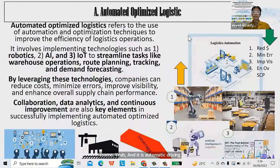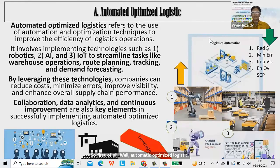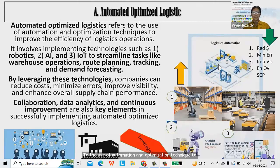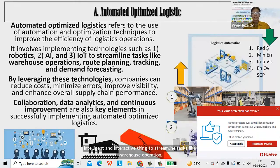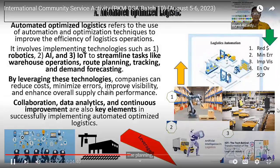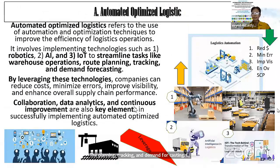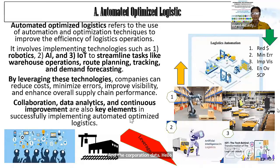First, automated optimized logistics refers to the use of automation and optimization techniques to improve the efficiency of logistics operations. It involves implementing technologies such as robotics, artificial intelligence, and the Internet of Things to streamline tasks like warehouse operations, planning, tracking, and demand forecasting. By leveraging these technologies, companies can reduce costs, minimize errors, improve visibility, and enhance overall supply chain performance. Data analytics and continuous improvement are also key elements.